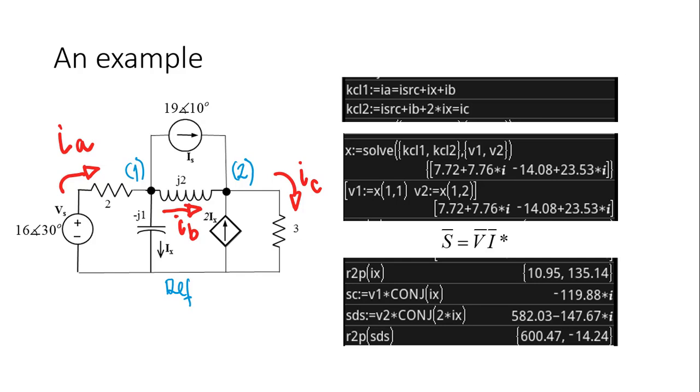The capacitor is absorbing negative 120 vars, so that means that the capacitor is actually delivering 120 vars. Why do I say it's absorbing negative 120? Because that current ix is flowing from high volts to low volts. That's why the computation is of absorbed power.